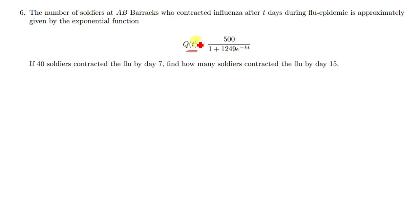Q(t) is representing the number of soldiers at time t days, and t is being given in days. The question says if 40 soldiers contracted the flu by day 7, find how many soldiers contracted the flu by day 15.